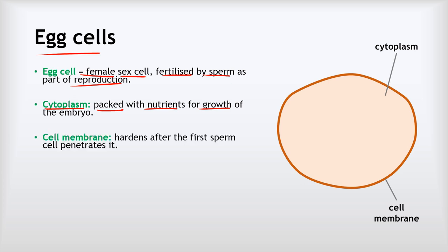The egg cell also has a cell membrane. All cells have a cell membrane, but what's special about the egg cell's membrane is that it hardens after the first sperm penetrates it, to prevent further sperms from trying to fertilise the egg. This is why only one sperm can ever fertilise an egg.